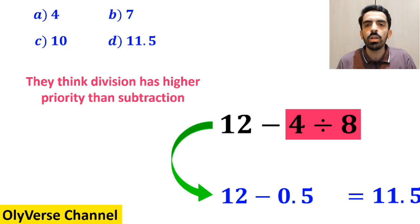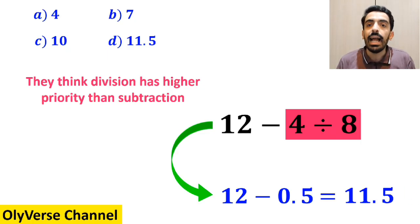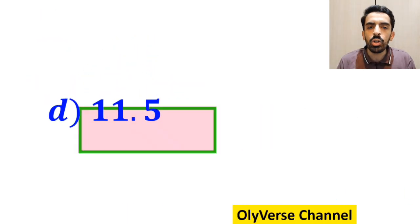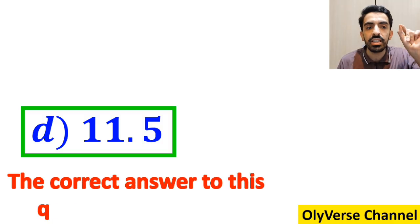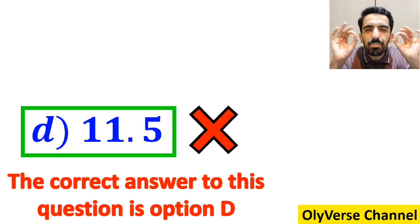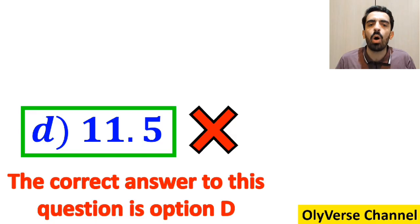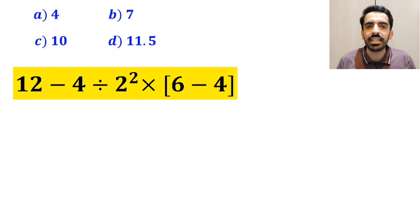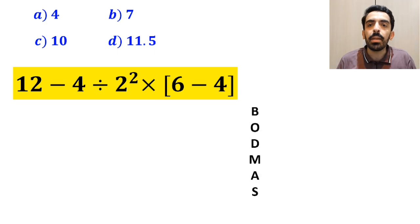That gives 11.5, and immediately they conclude that the correct answer to this question is option D. However, this answer is absolutely wrong. Now let me show you how to solve this expression properly. To solve this problem, we must follow the BODMAS rule.